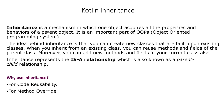Here, BMW is what we call a child class or child object, and the class from where we are inheriting — the car class — is the parent. Inheritance is an important part of OOP, which stands for object-oriented programming.